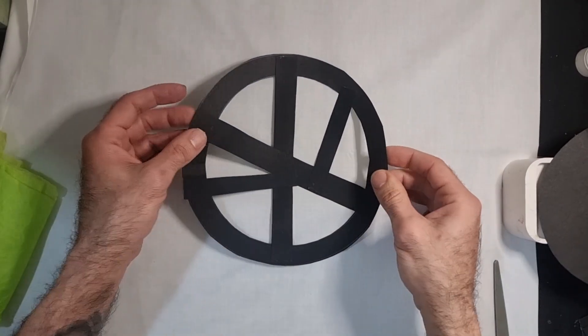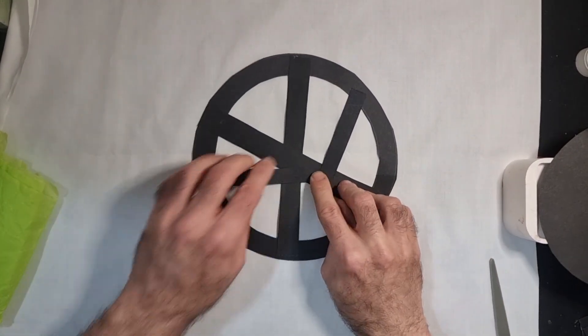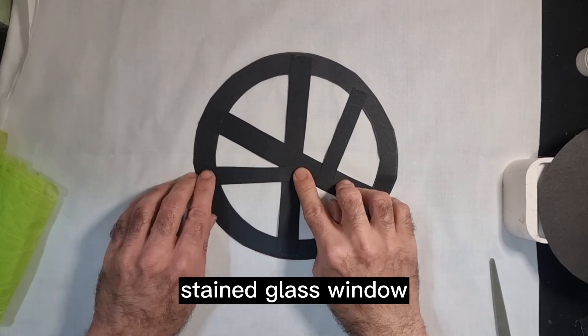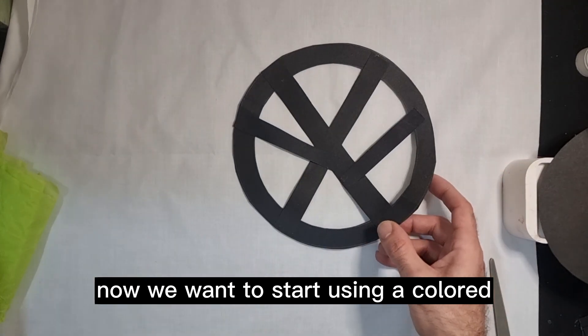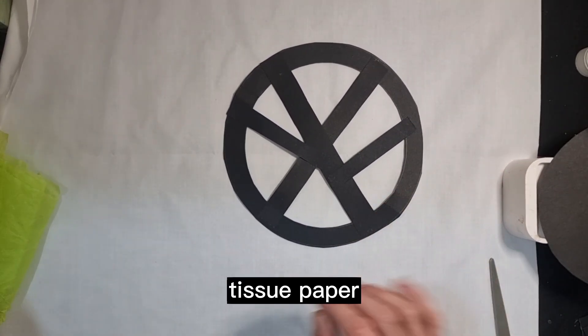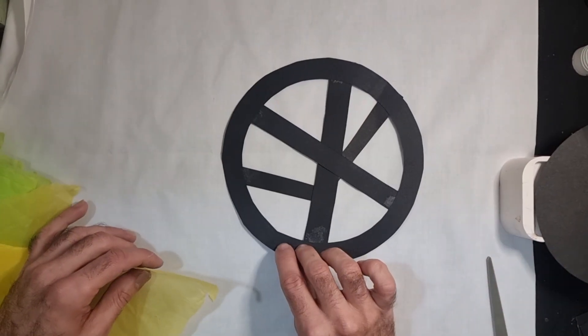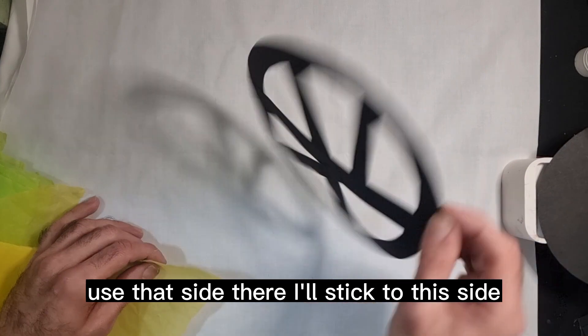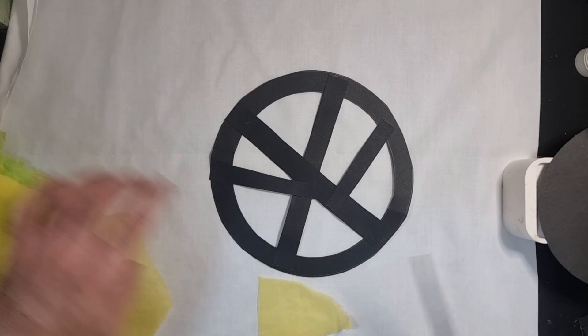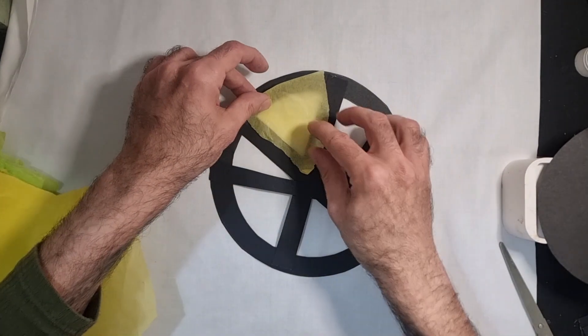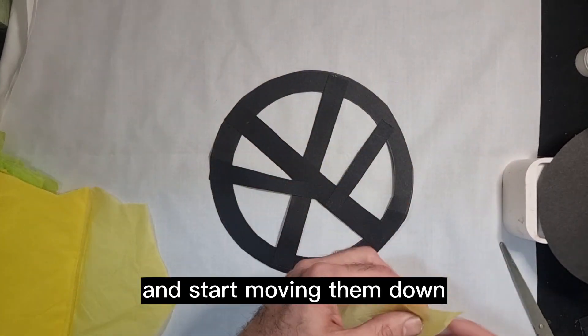Here we have the base for our stained glass window. Now we want to start using our colored tissue paper. I'll stick to this side, and you want to just cut off some random sheets like so and start gluing them down.